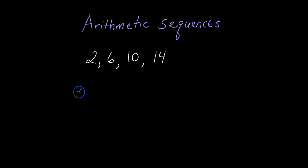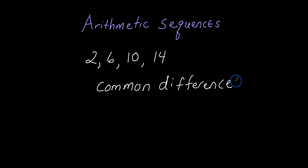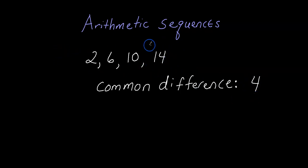There's a special name for the number we added each time — it's called the common difference. So if your teacher gave you this sequence and asked for the common difference, it would be 4, because that's what you're adding each time. Another way to find it: take any term and subtract the term before it. 14 minus 10 is 4, 10 minus 6 is 4, 6 minus 2 is 4.